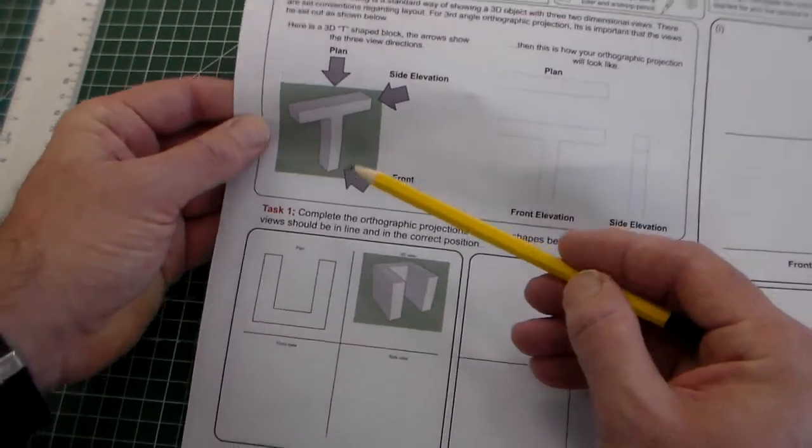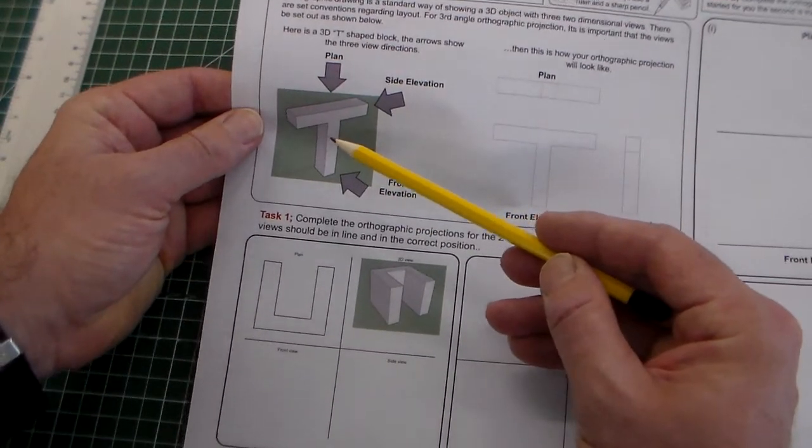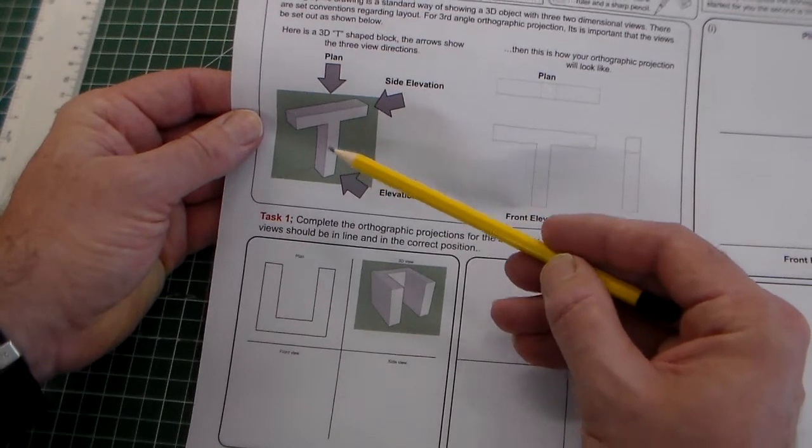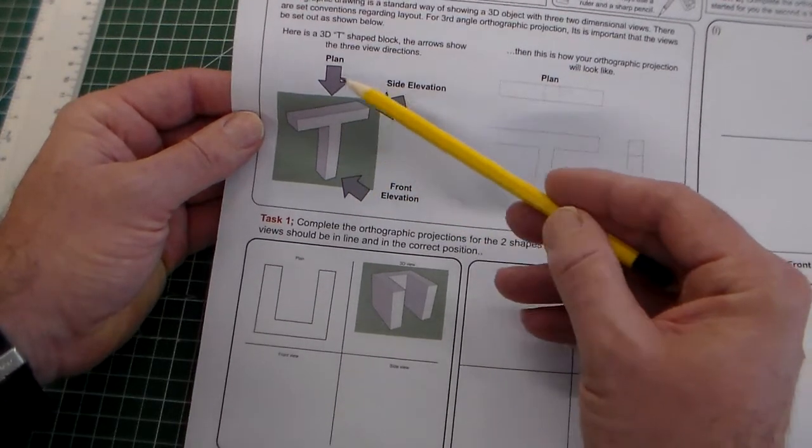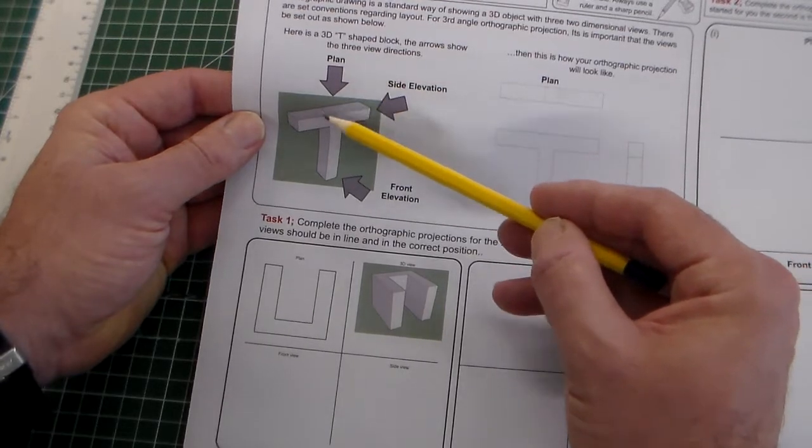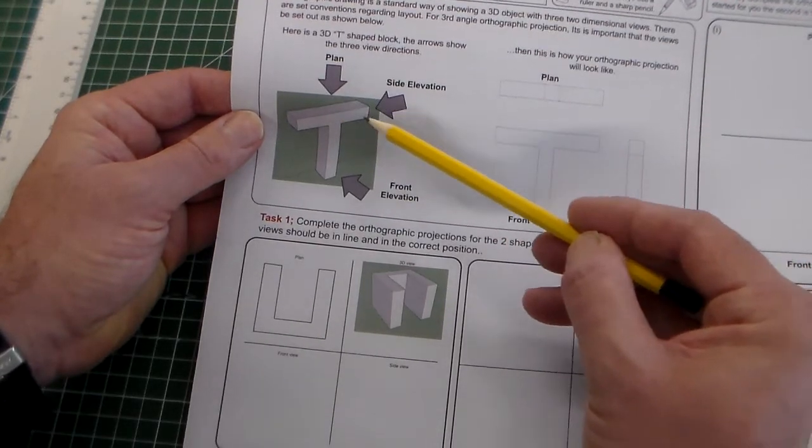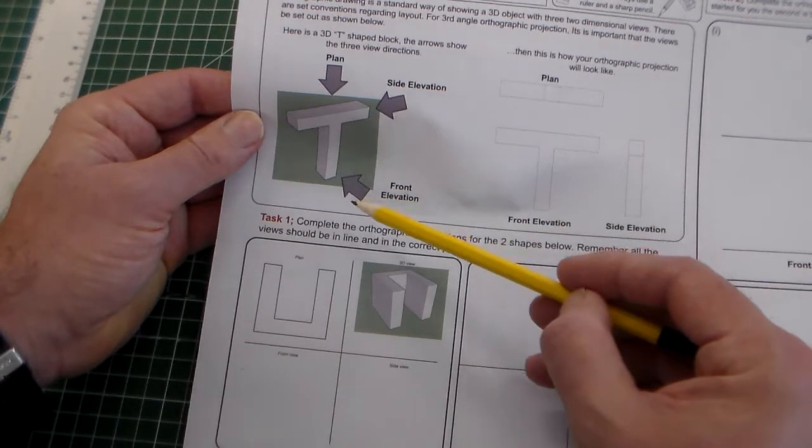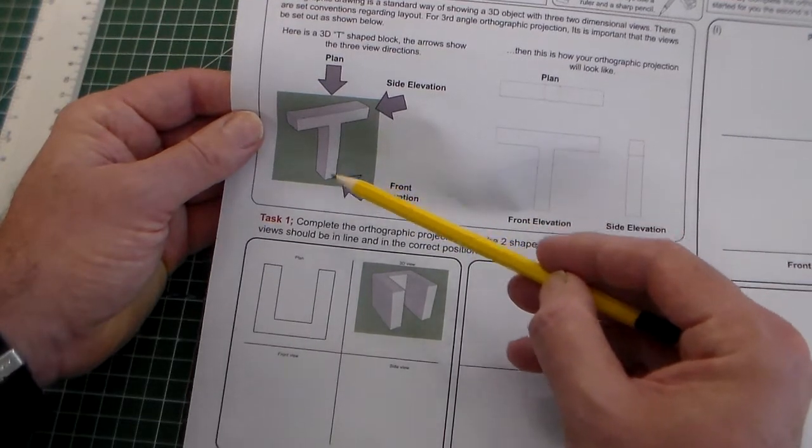So if we look at this illustration here, we've got a 3D view of an object, a sort of T-shaped object, and the three views that we're going to look at are plan view looking from the top, side elevation looking from the side, and front elevation looking from the front.